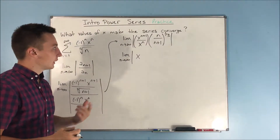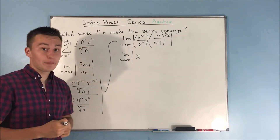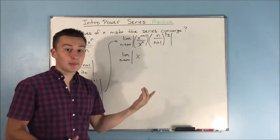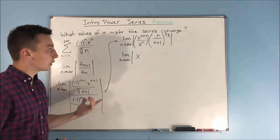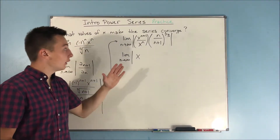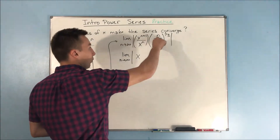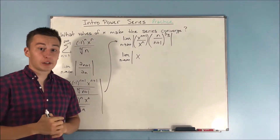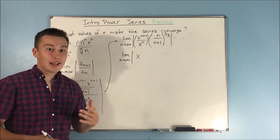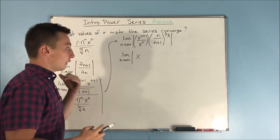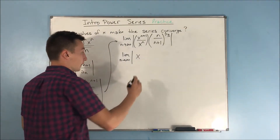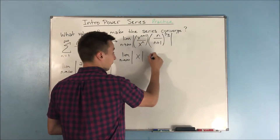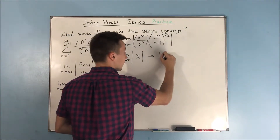Simplifying further, we get the limit as n approaches infinity of the absolute value of x to the n+1 over x to the n — which is just x. Now, what about n over n+1 to the one-third? It doesn't really matter that it's being raised to the one-third. The limit of n over n+1 as n approaches infinity is just 1, since the highest power of n is 1 and the coefficients on n to the first are both 1. So we just end up with the absolute value of x.